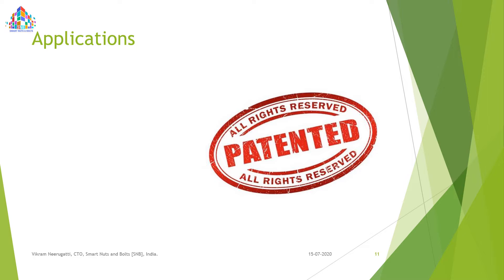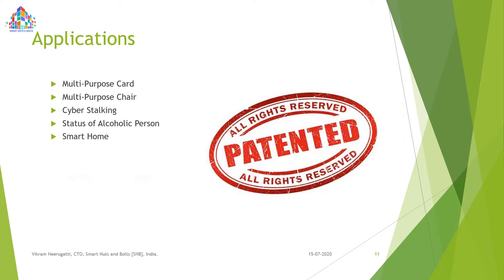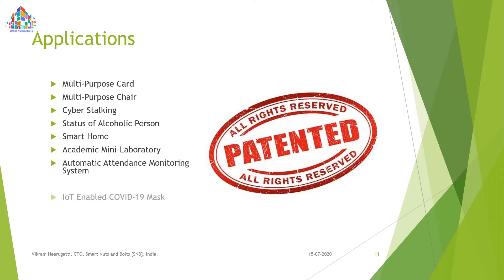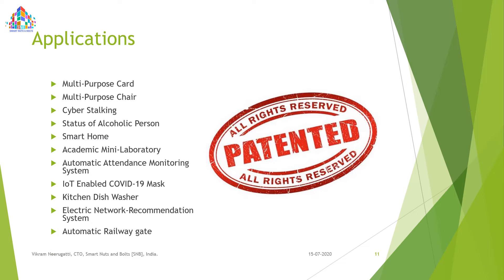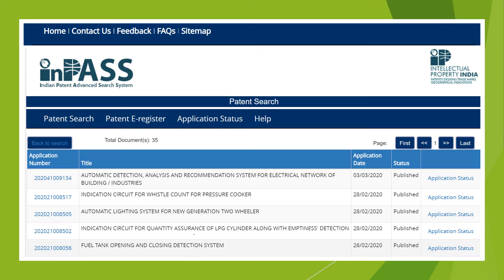Next, we will see the applications we have patented. These include: a multipurpose card, multipurpose chair, cyberstalking detection, status of alcoholic person, smart home, academic mini laboratory, automatic attendance monitoring system, IoT-enabled COVID-19 mask, kitchen dishwasher, electric network recommendation system, automatic railway gate system, detection of vehicle overload, and waste bin management system. All are patented under the name of Smart Nuts and Bolts, and a few are already in the market with satisfied customers.